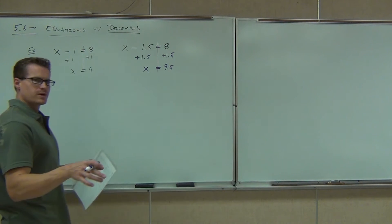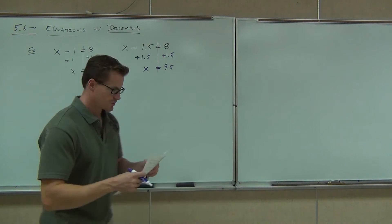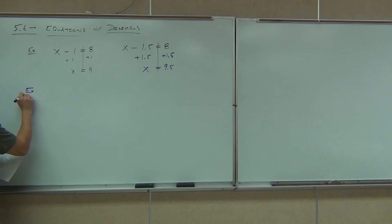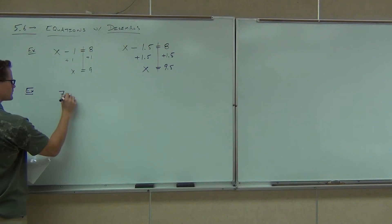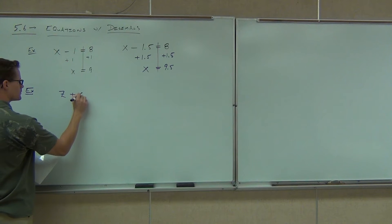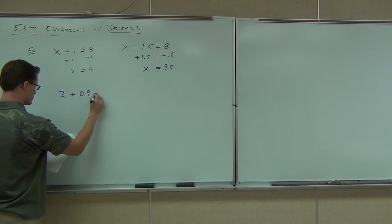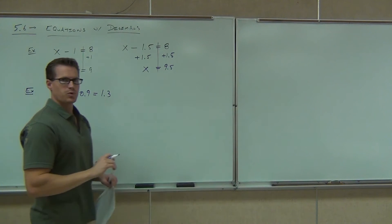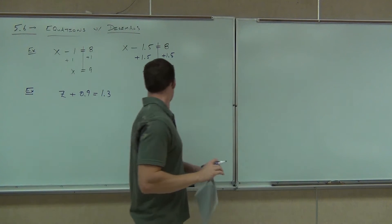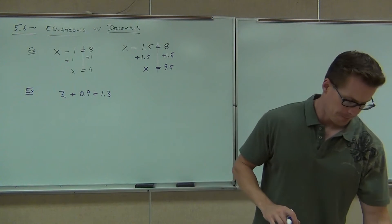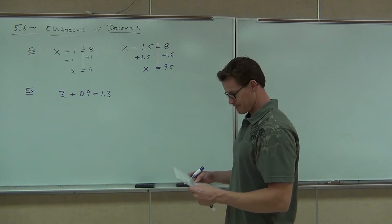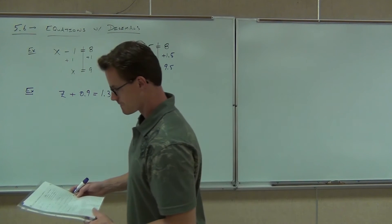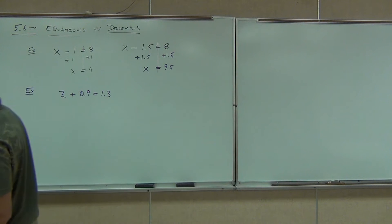Why don't you try one on your own? Just make sure you get the basic idea, and then we'll keep moving on. The problem is: Z plus 0.9 equals 1.3.